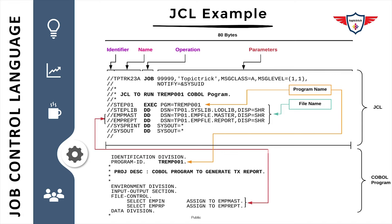The closing remark for today's JCL tutorial is that JCL provides a mechanism for programs to read input and write output to the requested physical resources. It can be viewed as a list of statements submitted for background or foreground processing. This marks the end of today's JCL tutorial. If you have any questions related to JCL, please mention them in the comment section.